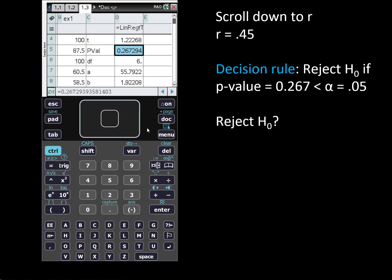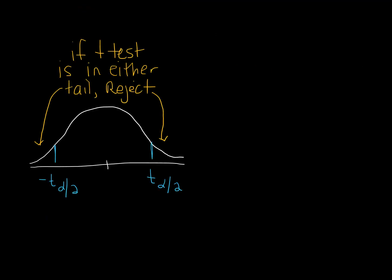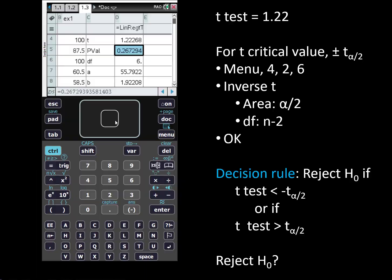Now let's use the second decision rule. Because we're conducting a two-tailed test we're going to determine whether the test statistic is in either of the tails and if it is we will reject the null. We're conducting this test with the t-distribution. We will use the inverse t function in order to get a t-critical value. The calculator output shows us the t-test statistic is 1.22 and we can go to the inverse t and get our t-critical value.